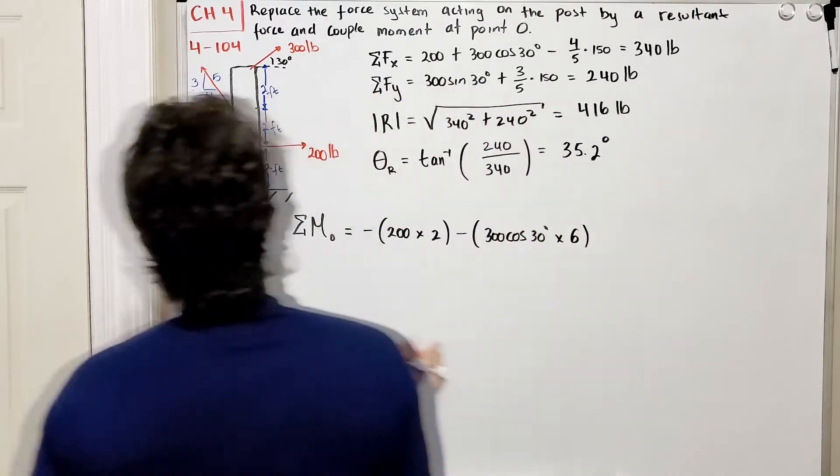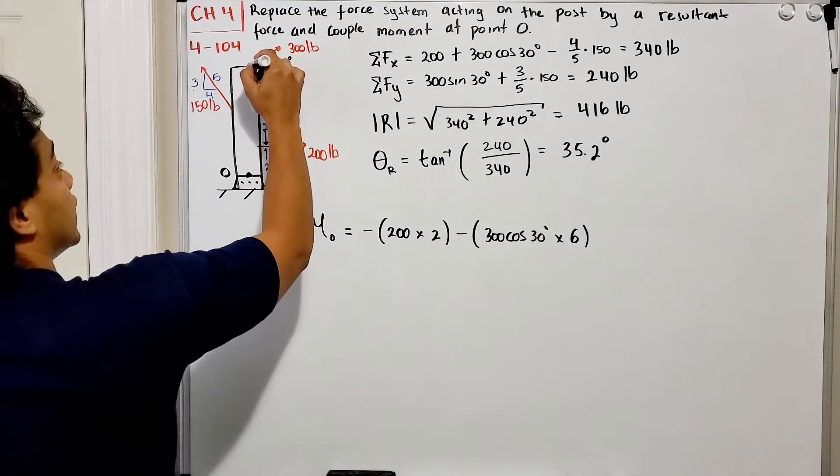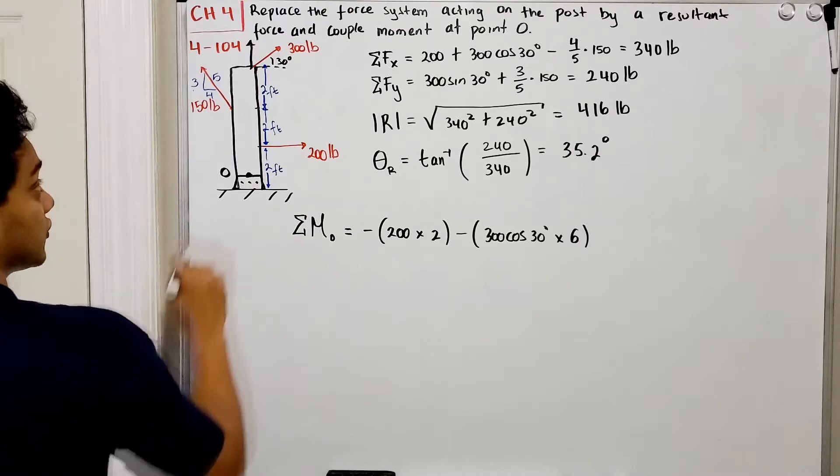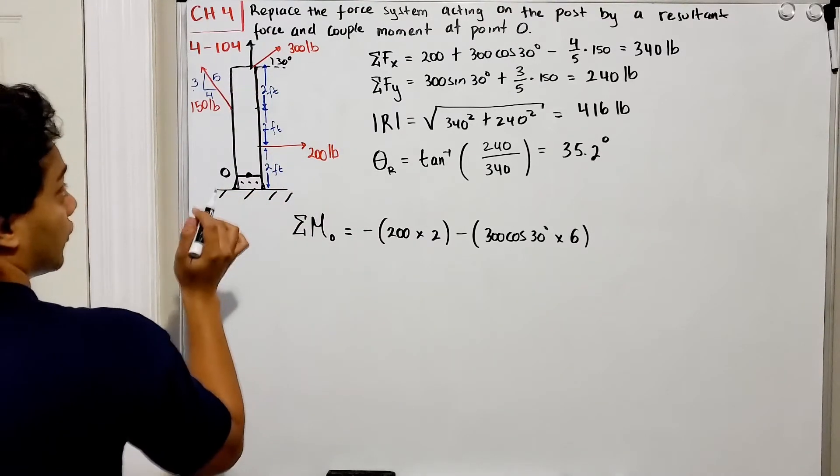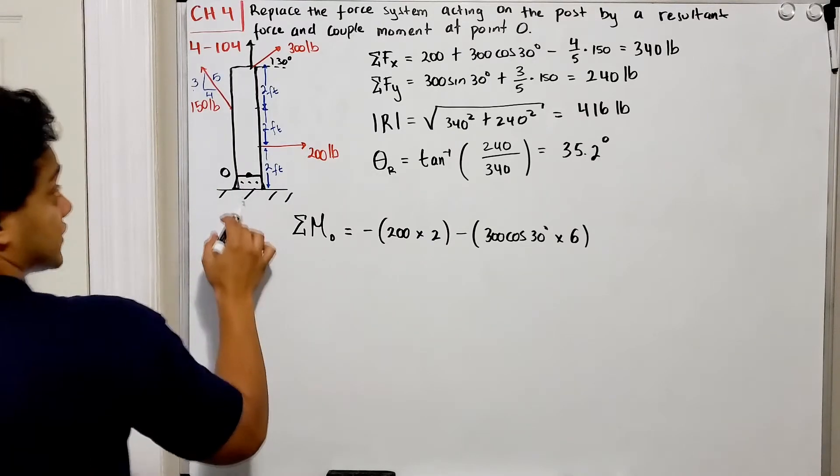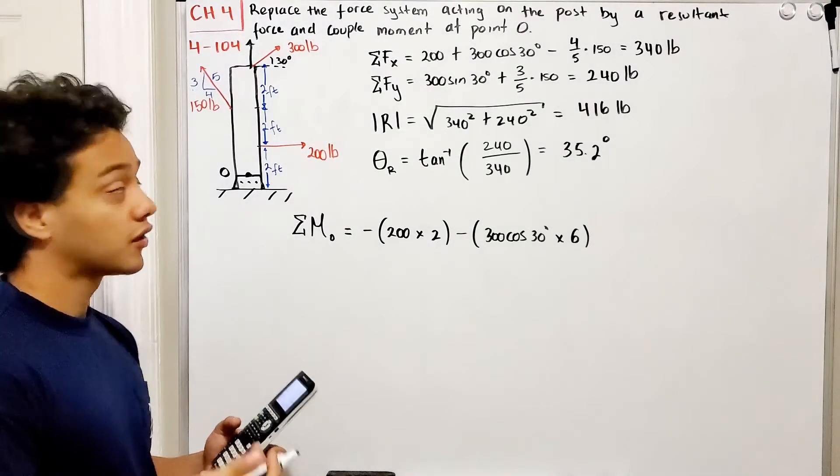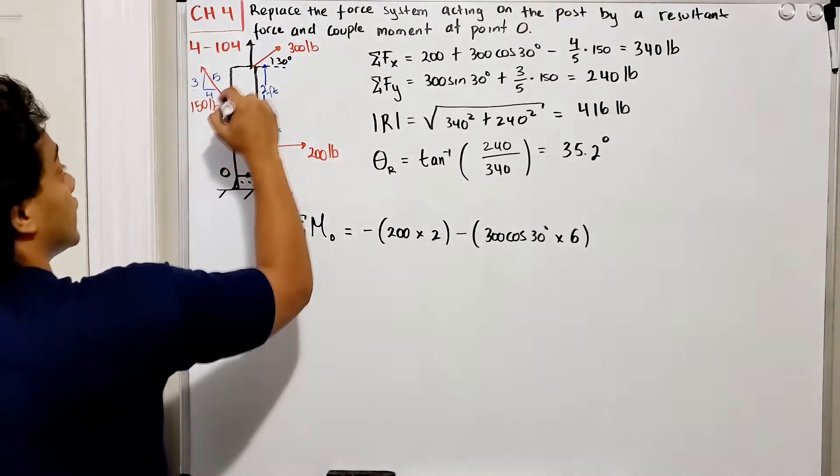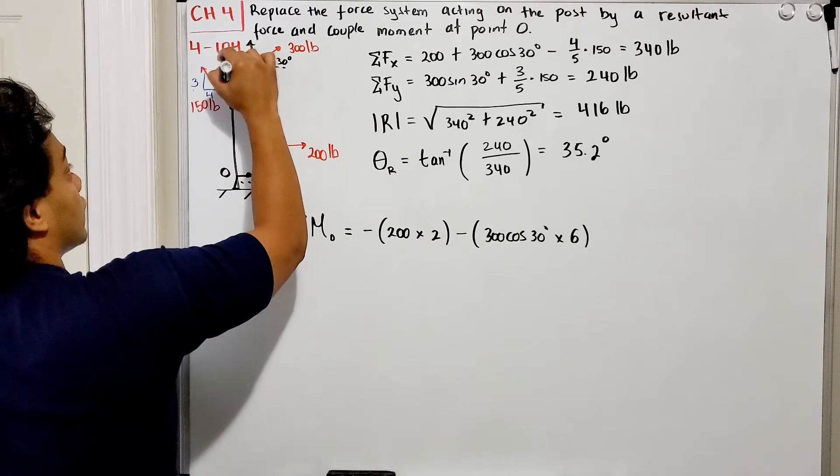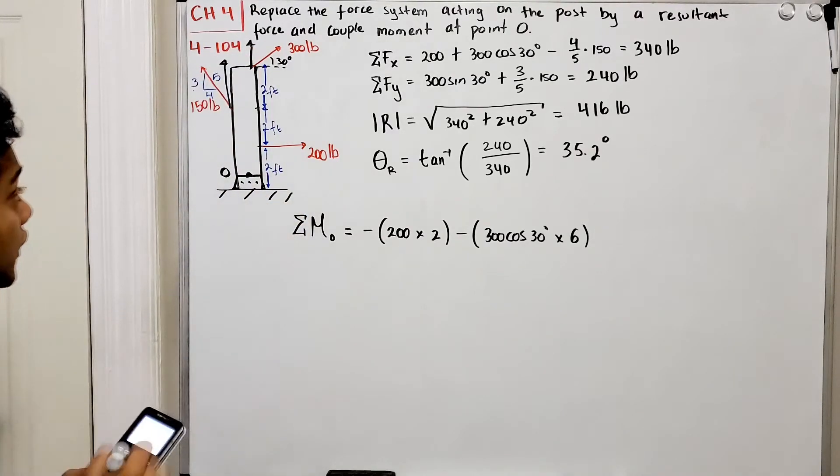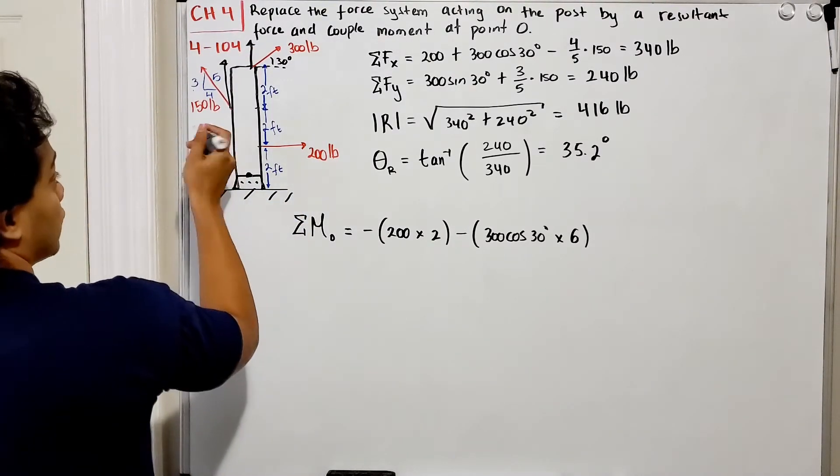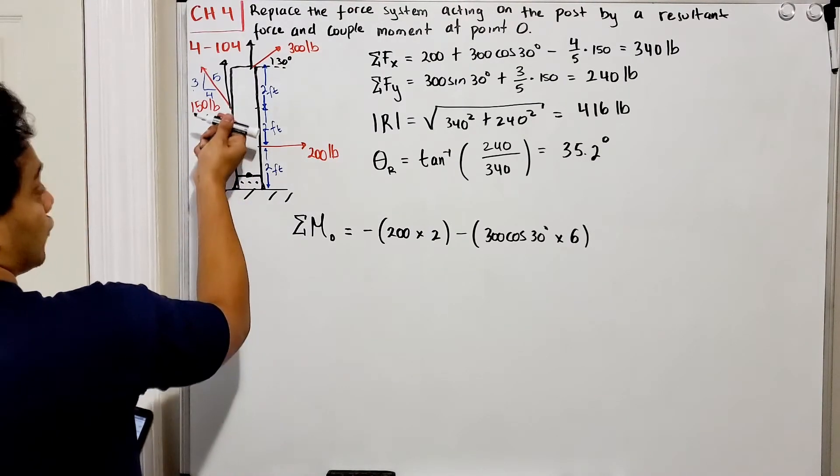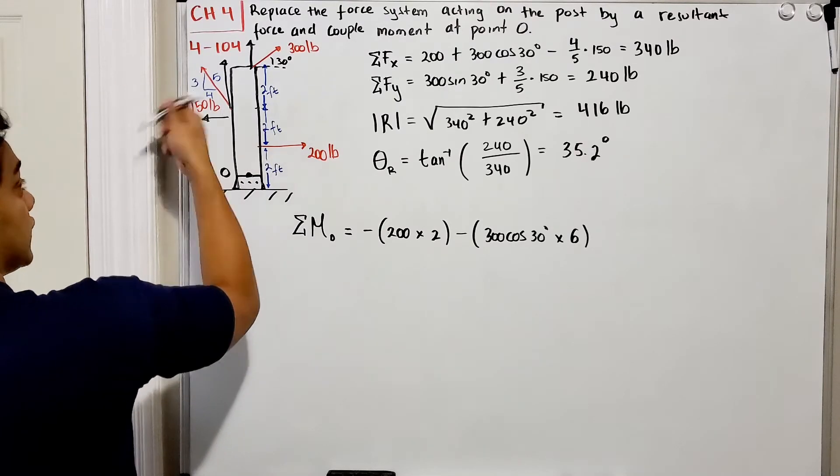Now the y component of this force is acting in this direction, which has zero distance. If I multiply force times zero, it will give me zero moment, so I don't have to worry about that one. Same for the y direction of this 150 pound. I only have to worry about the x direction of this 150, and it will rotate the system counterclockwise, so it's going to be positive.